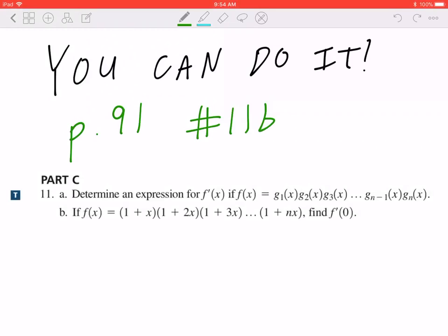Hi everyone, let's take a look at number 11b on page 91. If f of x equals 1 plus x times 1 plus 2x times 1 plus 3x all the way to 1 plus nx, find f prime of 0.